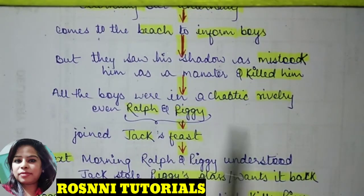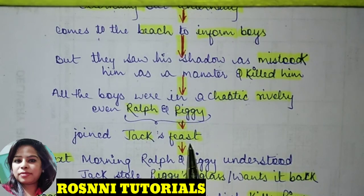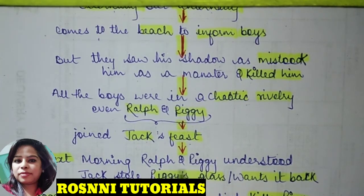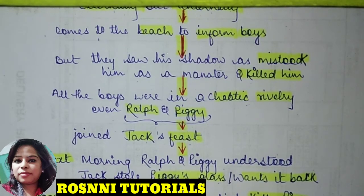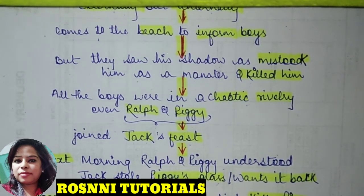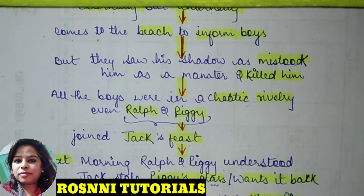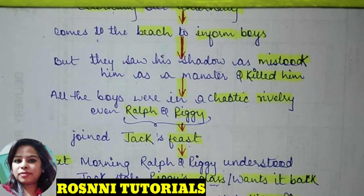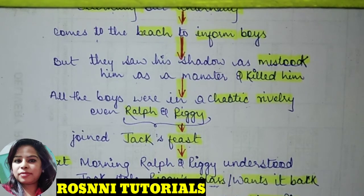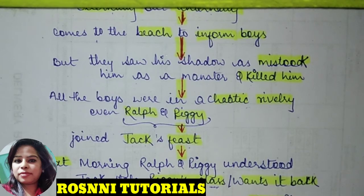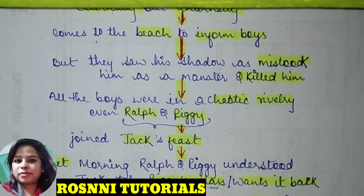All the boys fell into chaotic rivalry, and everyone started fighting, including Ralph and Piggy. Jack had conducted a feast with the pig. The next morning Ralph and Piggy found that Jack had stolen Piggy's glasses. They confronted Jack, fighting broke out again because Jack needed the glasses to light fire for roasting his hunted pig. Roger, taking Jack's side, rolled a boulder from the mountain which killed Piggy — the most intelligent person in the group.